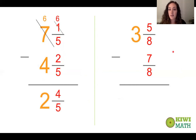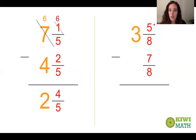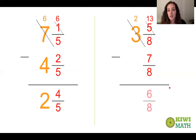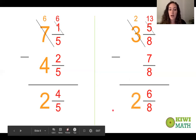Three and five eighths minus seven eighths. We don't have enough, but make sure — just because we're doing similar examples — you should always check whether you actually need to rename before solving. Here we see five eighths; we don't have enough to subtract seven eighths, so we do need to rename. We take from a whole, cross out the three — it becomes a two. We add eight eighths to the five eighths, giving us thirteen eighths. Thirteen eighths minus seven eighths is six eighths. Two minus zero is two, so our answer is two and six eighths.